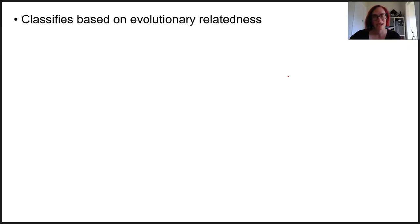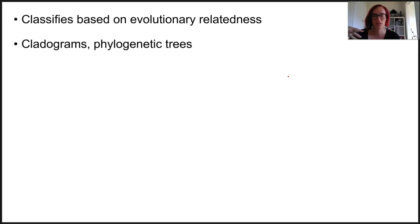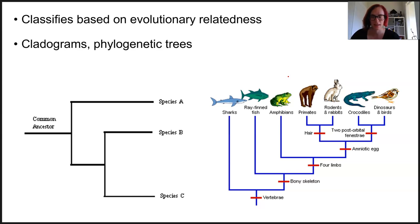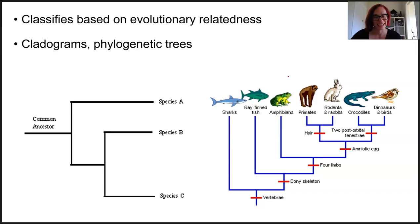Cladistics is a method of classification which arranges organisms into groups based on their evolutionary relatedness. Cladistics uses visual representations of these evolutionary relationships through the creation of cladograms and phylogenetic trees. They're basically providing a best guess for the pathway that organisms have taken as they change compared to their shared common ancestor.